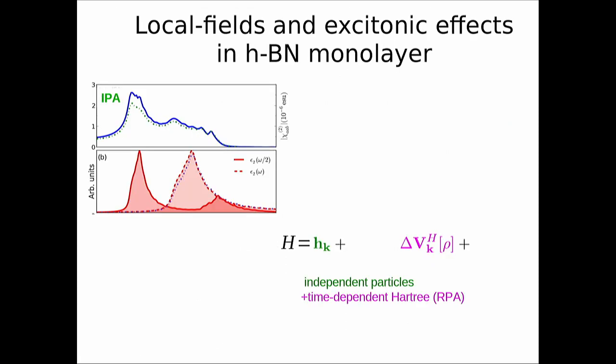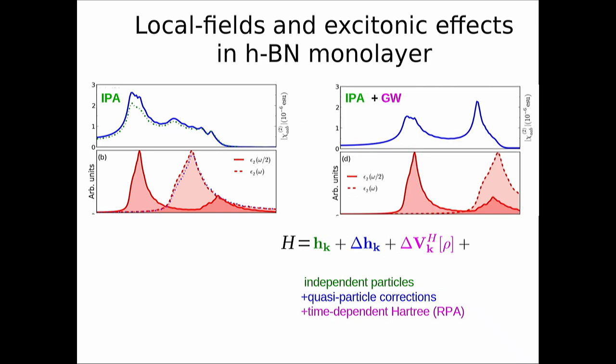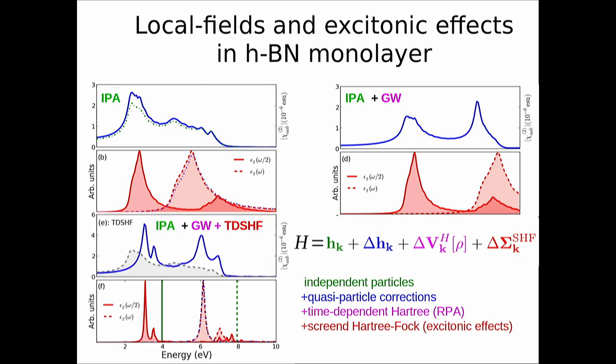When you propagate in real time coupled with the Berry-phase polarization, you can also get exciton effects in nonlinear response. Here is an example on hexagonal boron nitride. At the independent-particle level you get the dielectric constant and the second harmonic generation. Adding GW shifts the dielectric constant but also changes the shape of the SHG. Turning on the screened exchange term generates excitons in linear response and replicated excitonic peaks in nonlinear response — resonances at ω and at 2ω.